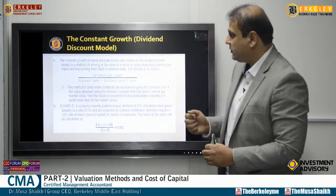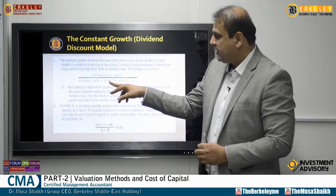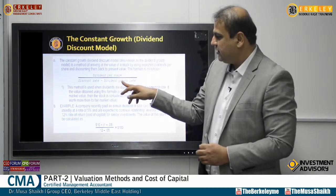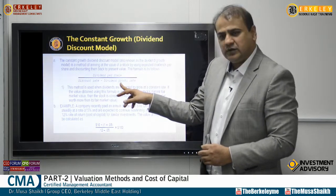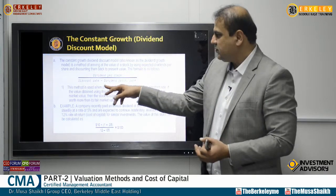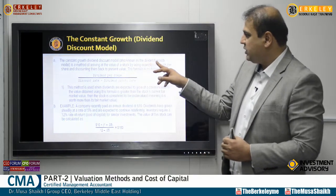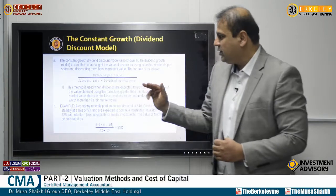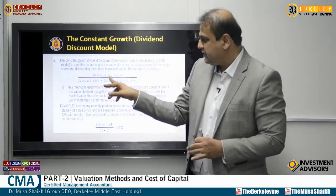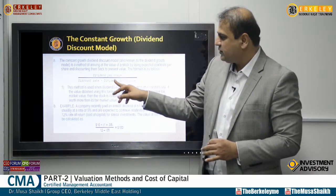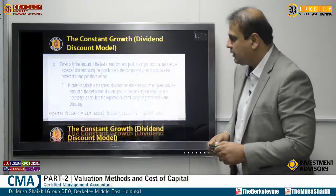That's why we calculate the constant growth dividend discount model. We take dividend per share and divide by the discount rate minus the dividend growth rate. For example, if the discount rate is 12% and the dividend growth rate is 5%, we plug in the figures. This model, also called the dividend growth model, arrives at the value of stock using expected dividend per share discounted back to present value.